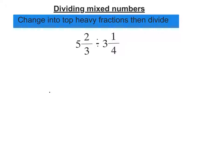For 5 and 2/3, in every whole I've got 3 thirds and I've got 5 of them, so that's 5 times 3, plus the 2 that are left over.